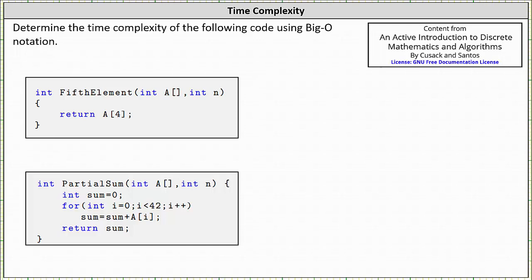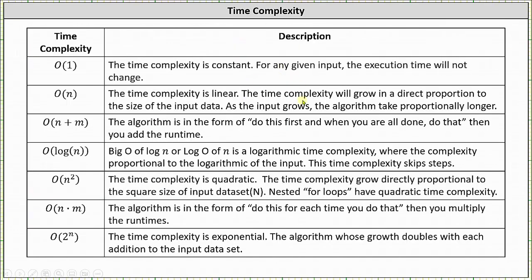In this lesson, we will take a look at four examples of determining time complexity of code using big O notation. Before we get started though, I do want to share this table that gives the time complexity on the left and a description on the right. You may find this helpful for reference.